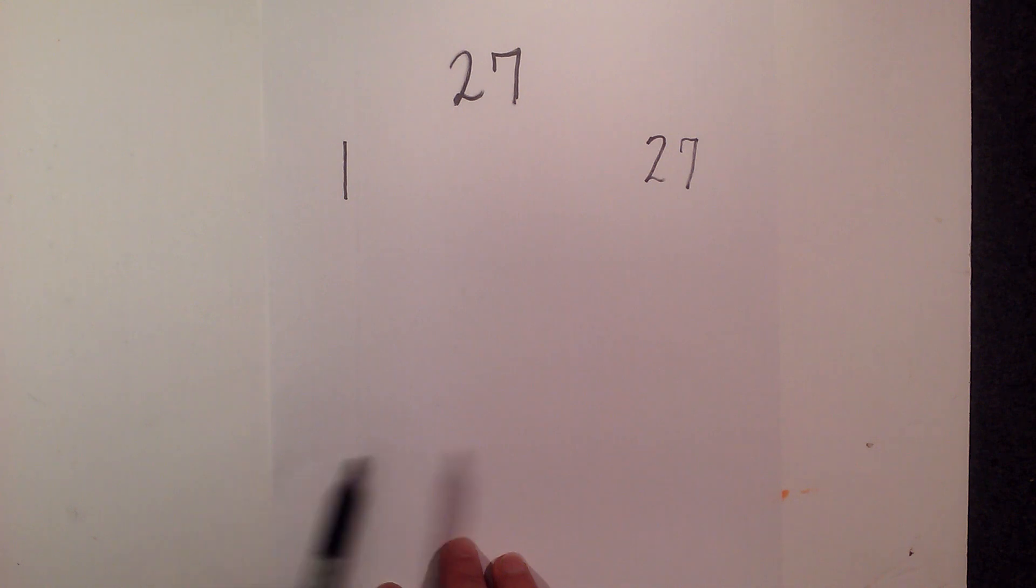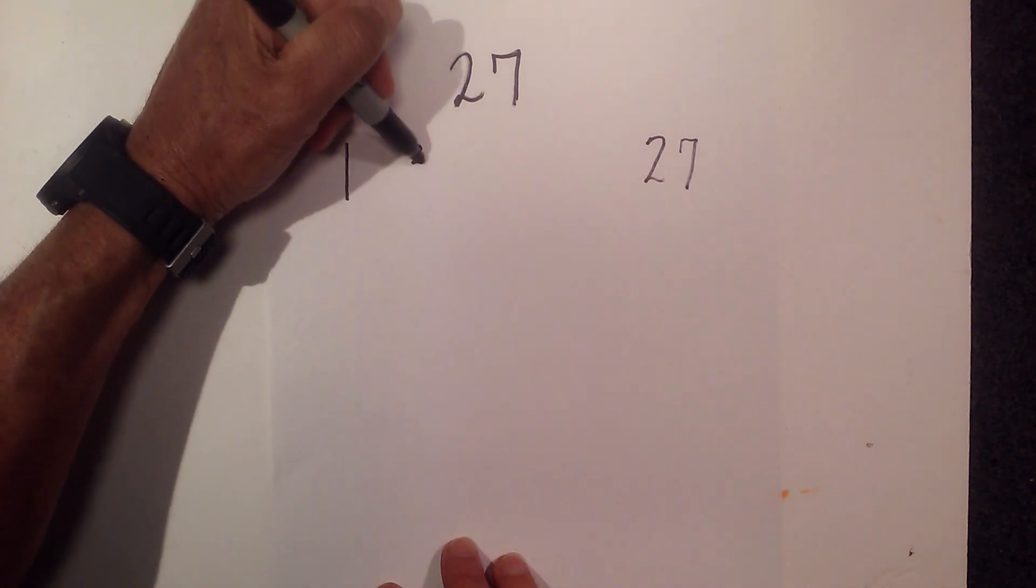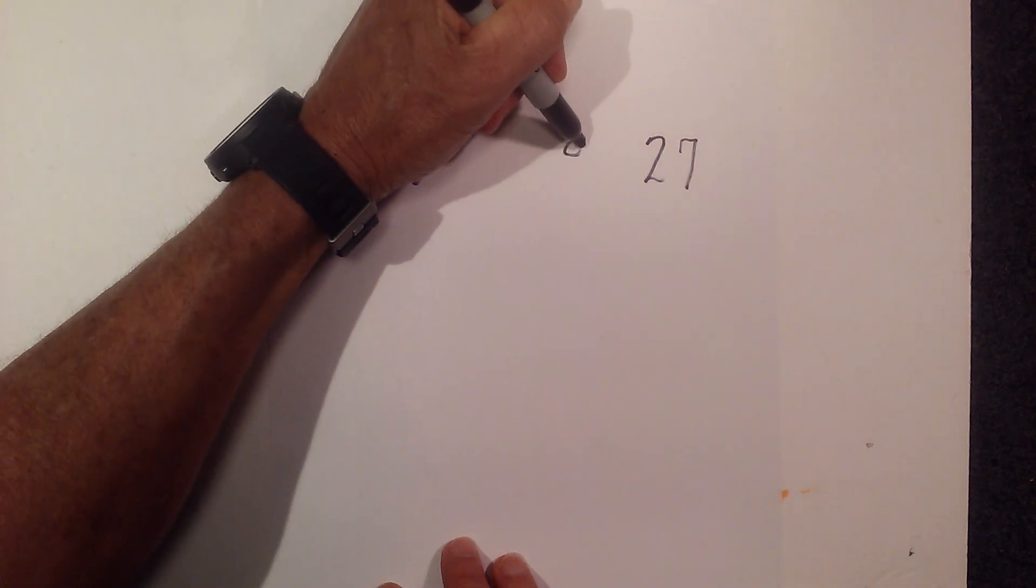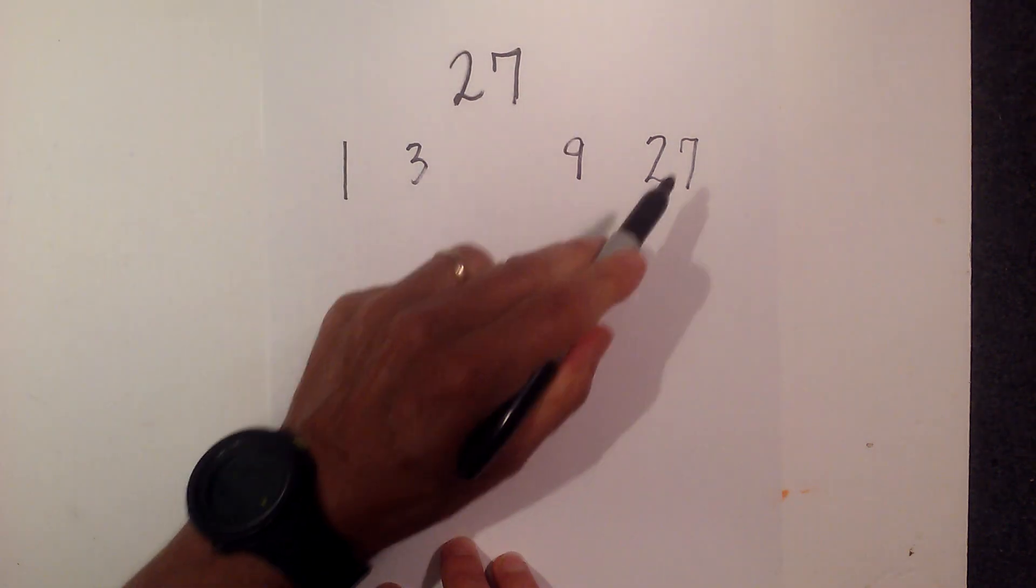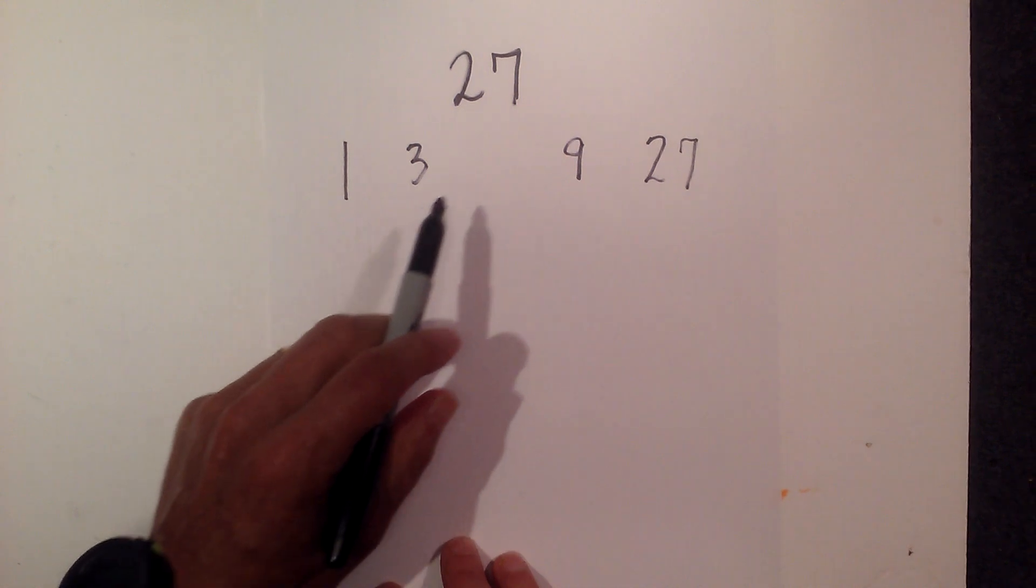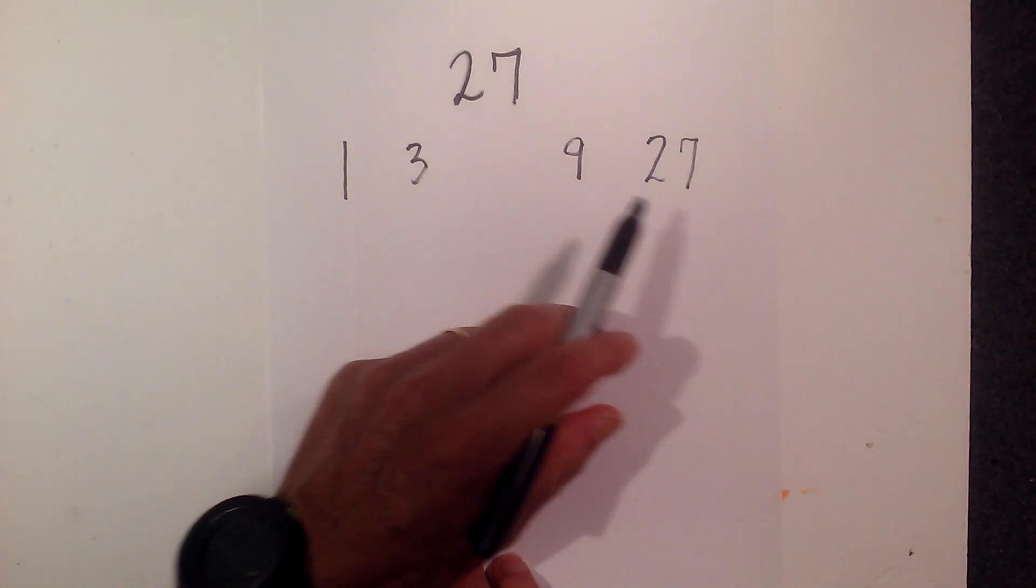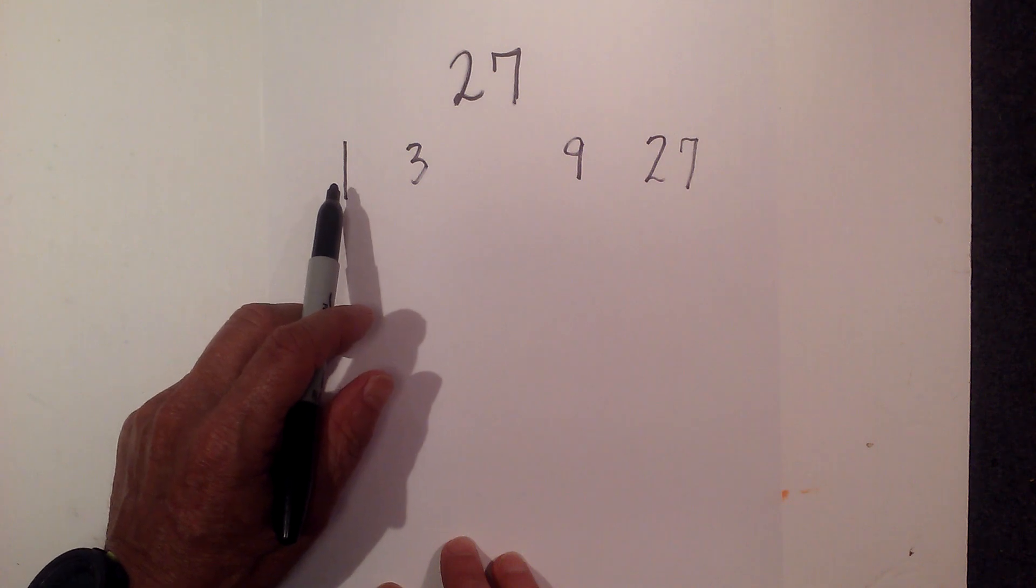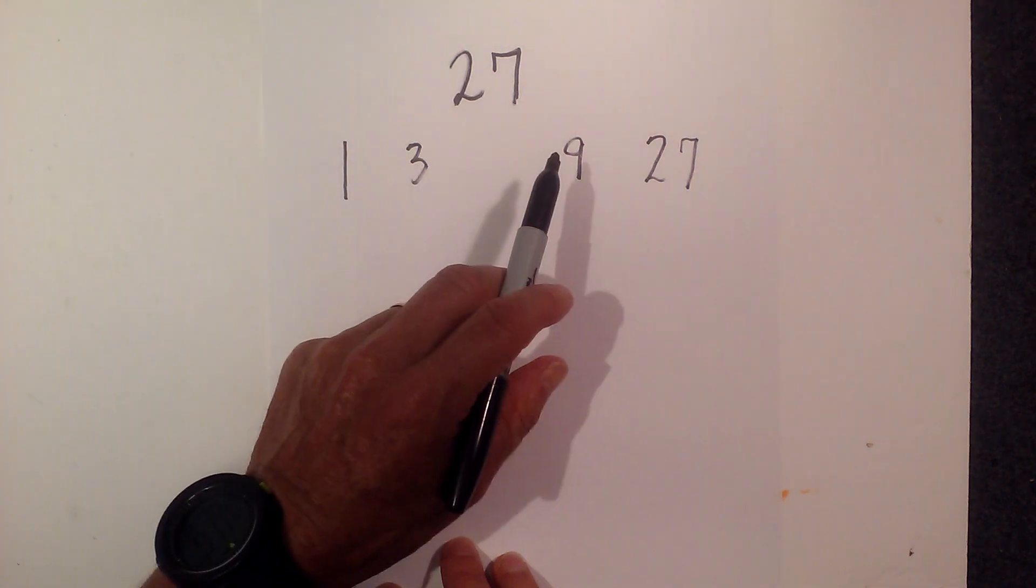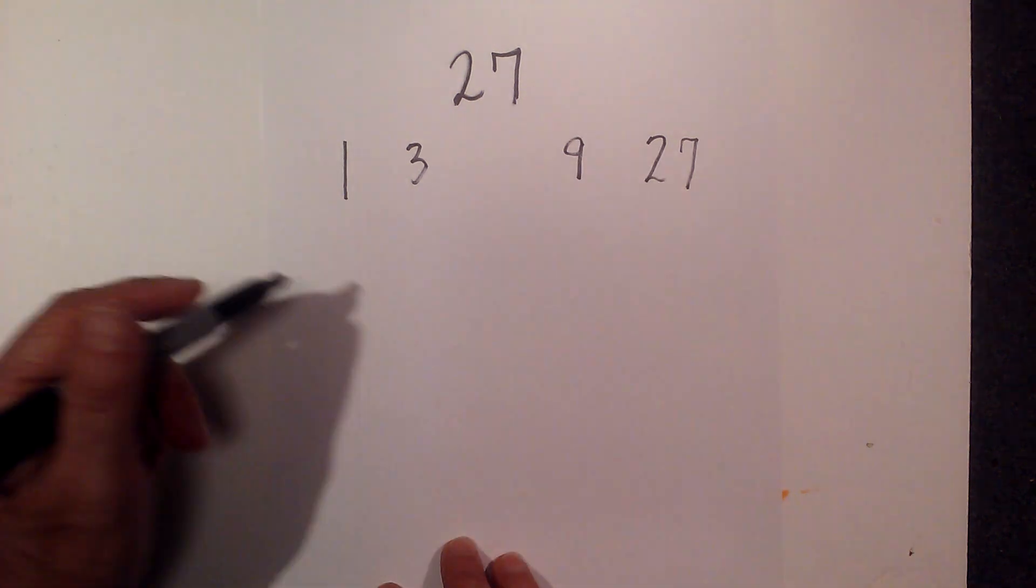So let's start with 2, will not go into 27. 3 goes into 27 nine times. 4 does not go into 27. 5 does not go, 6 nor 7 nor 8. So the factors of 27 are 1, 3, 9, and 27.